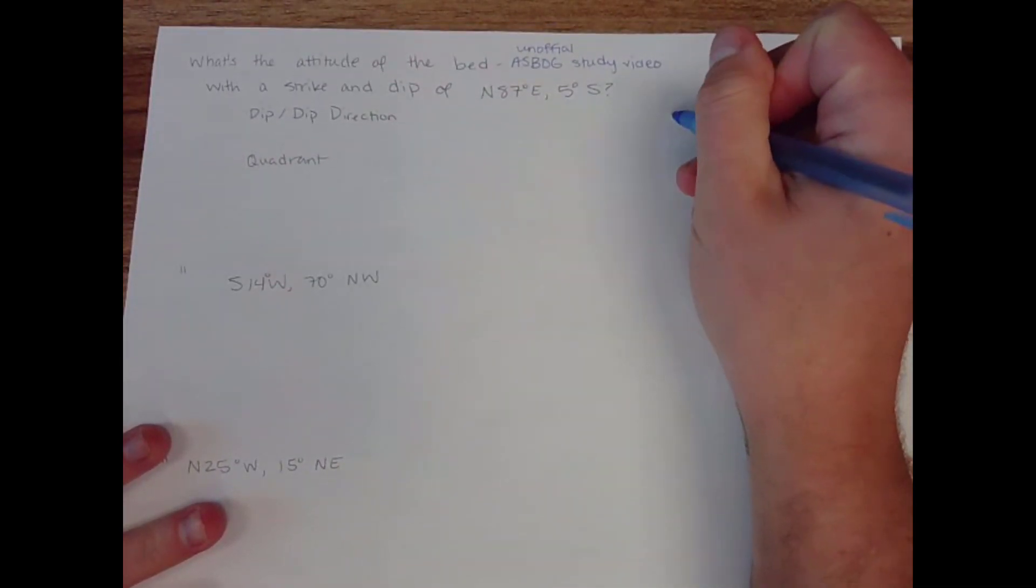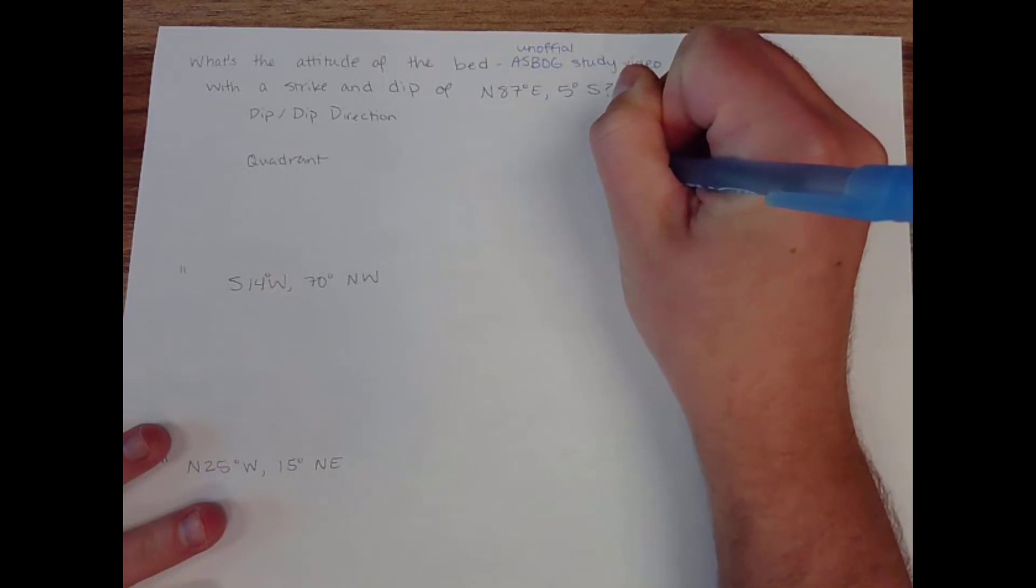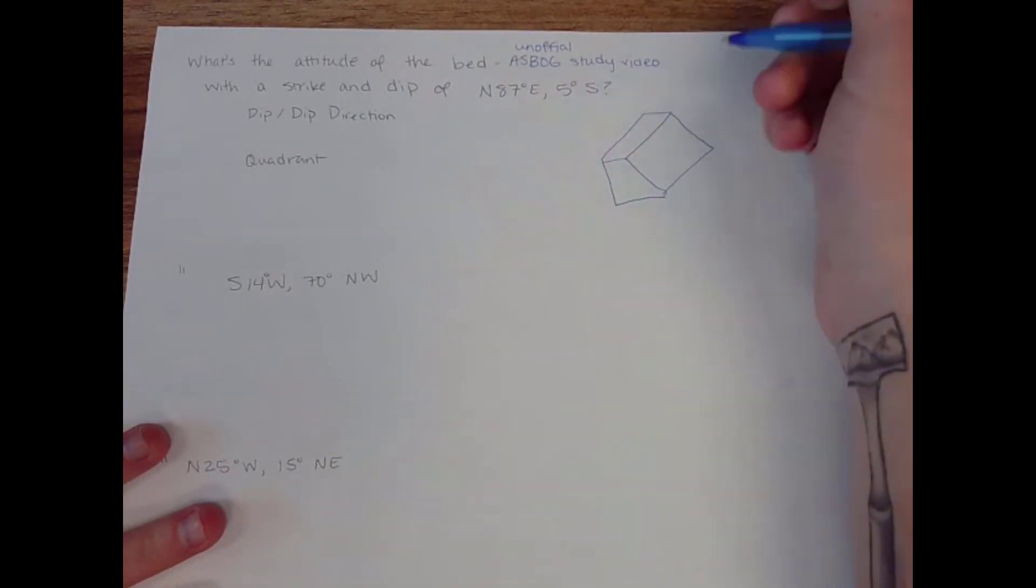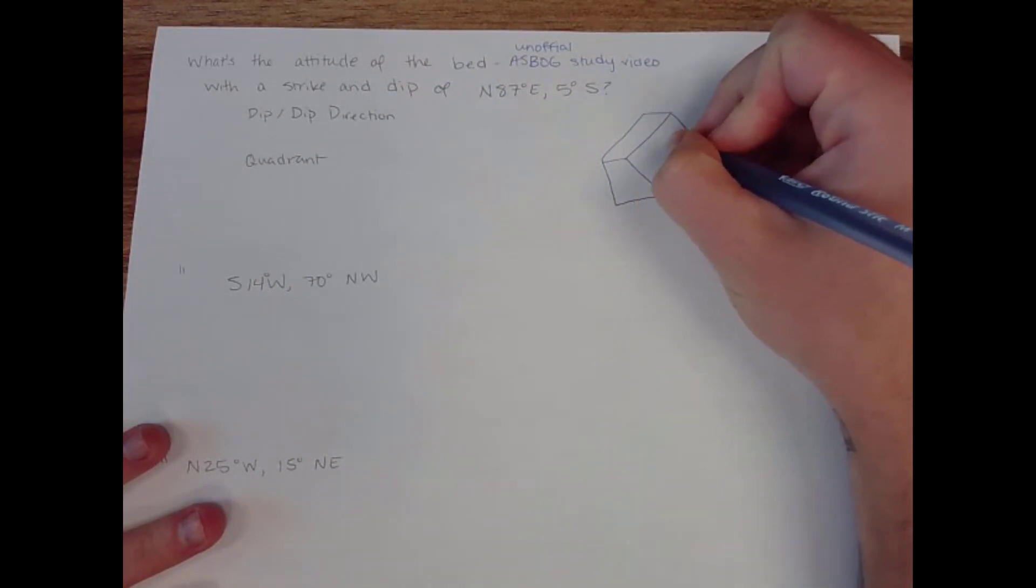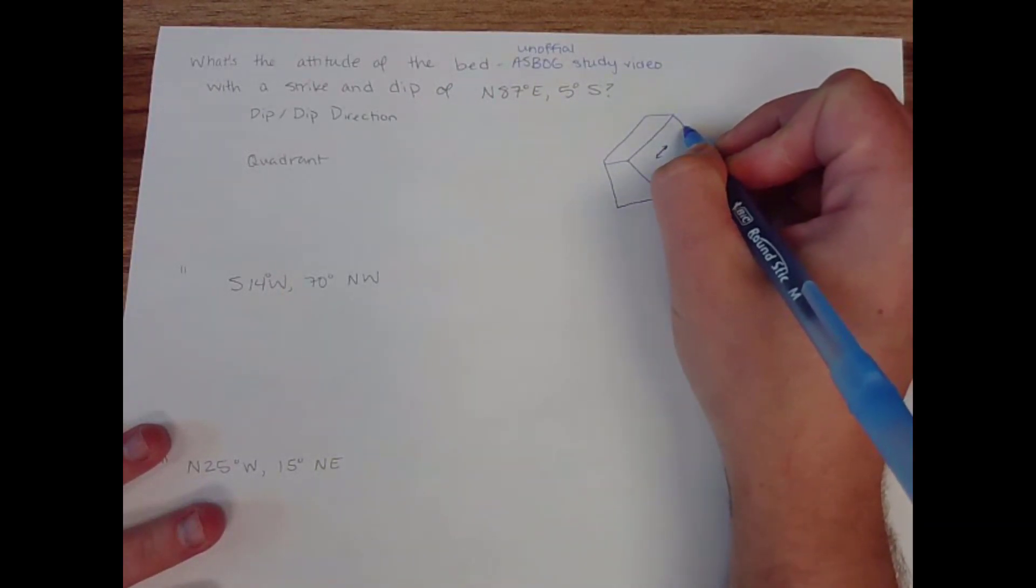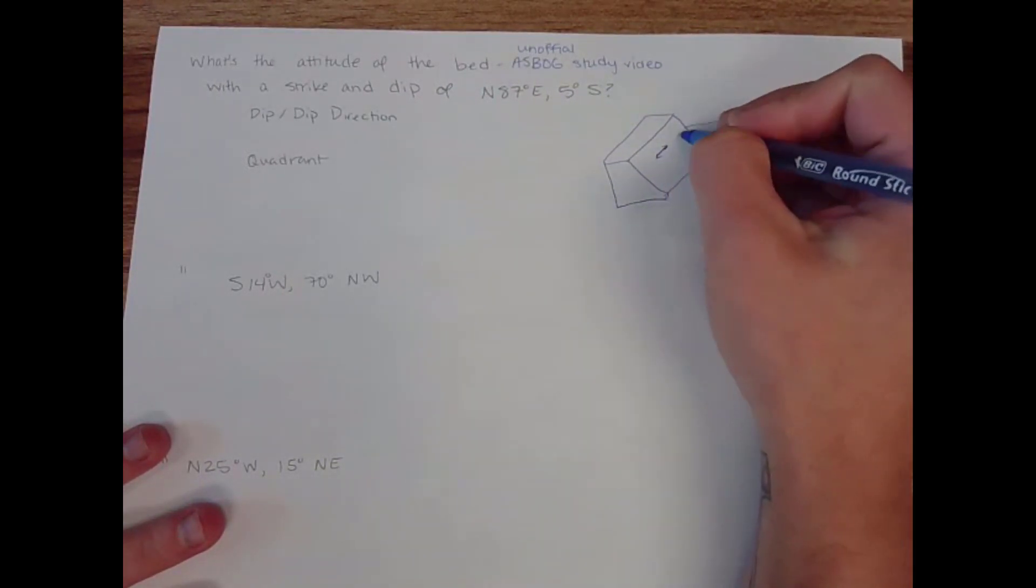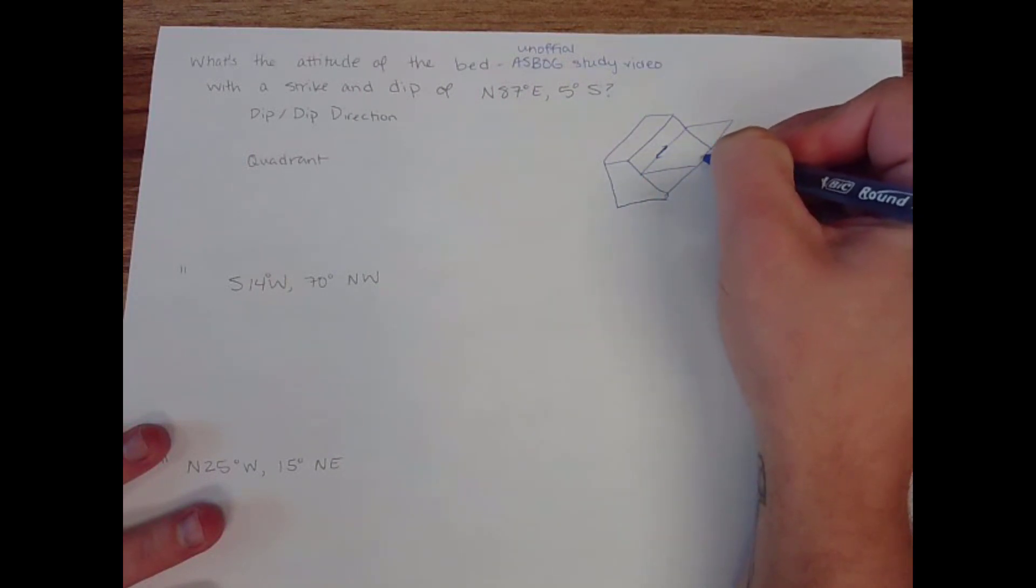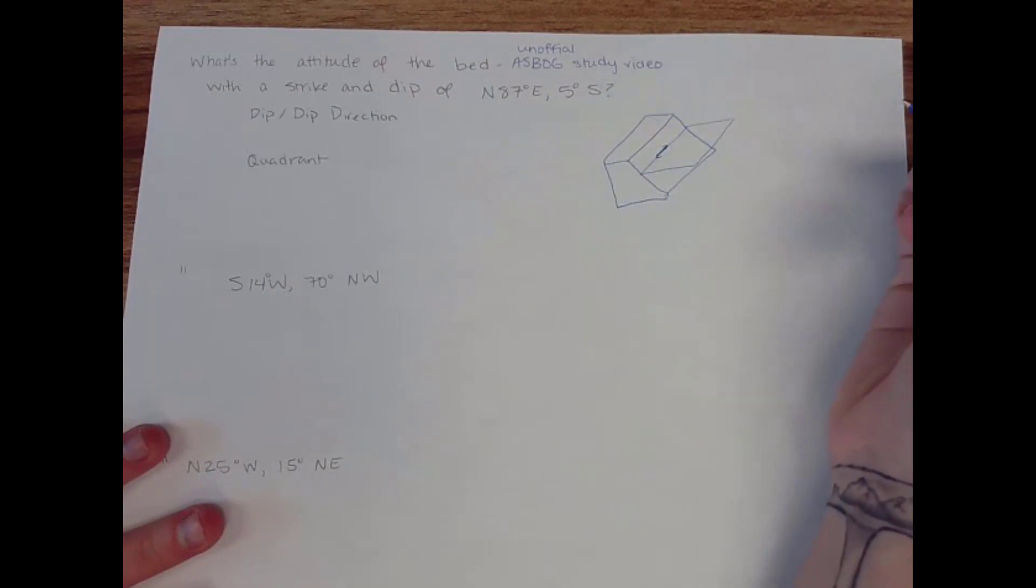Let's say that you have a surface. Maybe it's a fault surface, something like this. Okay, let's say this is the surface that you're looking at. So this surface has a strike, which is the direction where if you took a horizontal plane and you try to intersect horizontal plane with this surface, that intersection line is your strike.